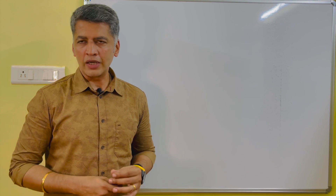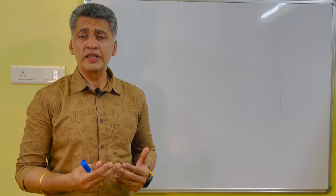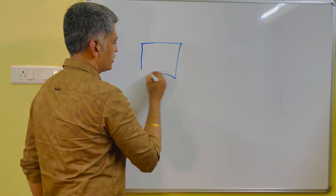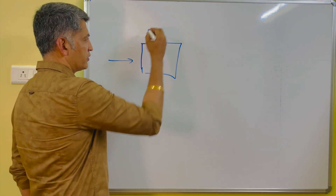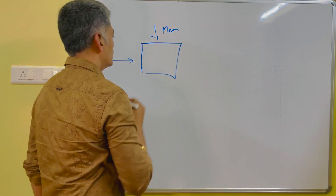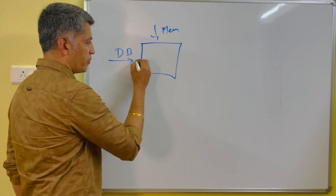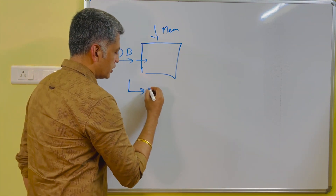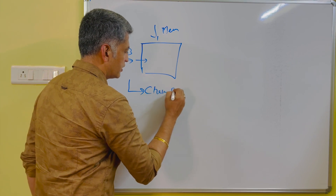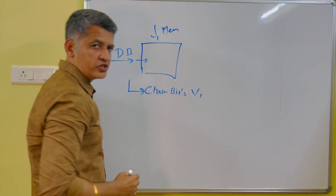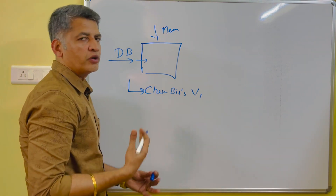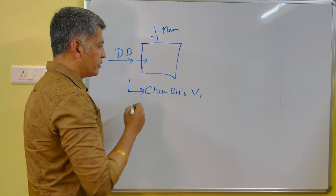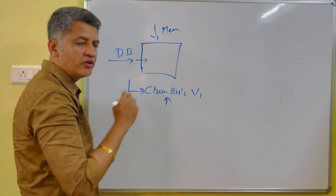Here you need to understand that while you are storing the data bits into the memory, during the syndrome word calculation, check bits version 1 will be generated first. For better understanding, I am using these terms. So while you are storing the data bits to the memory, check bit version 1 will be generated.